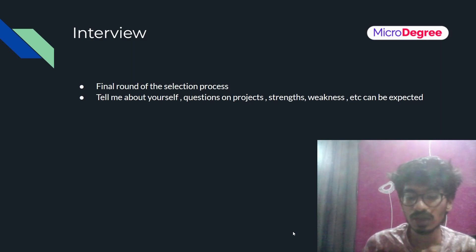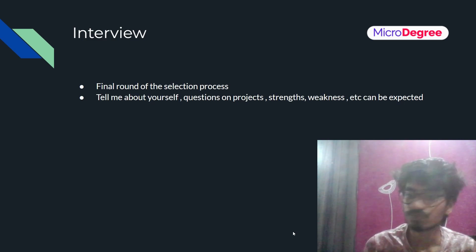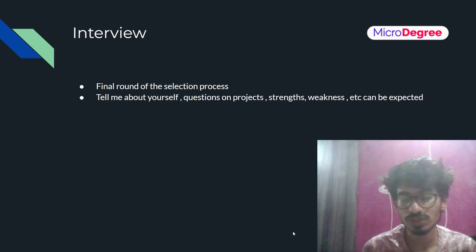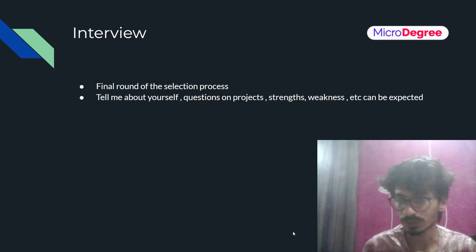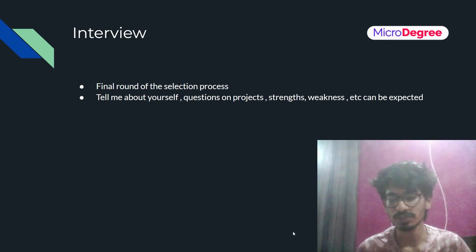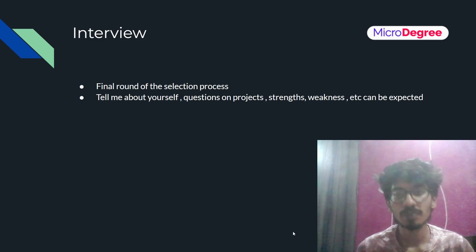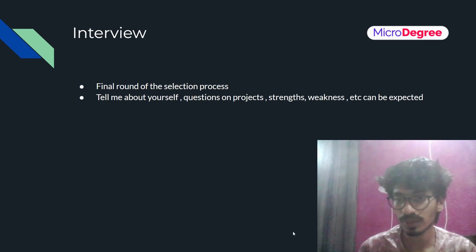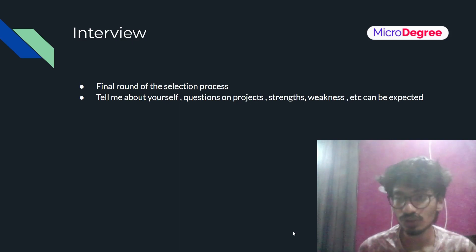Based on your performance across all four rounds, there are three possible outcomes: they can select you as a Software Engineer, select you as an Associate Software Engineer, or reject your application. That was everything about the Accenture recruitment process. If you want a video on any specific topic, put it in the comments section and we can make a video on that as well. Thank you!